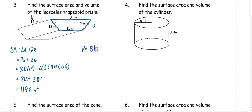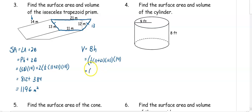To get our volume, it's the base area times the height. So the base area is one half times 11 plus 21 times 12, and then multiply by the height of the prism, which is 14. So we have 192 times 14, which gets us 2688 meters cubed.